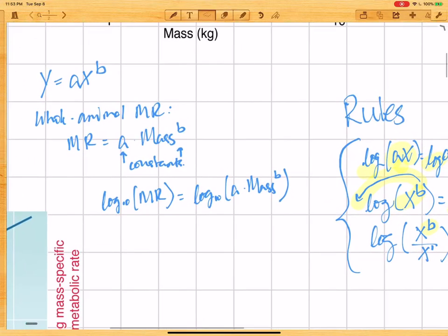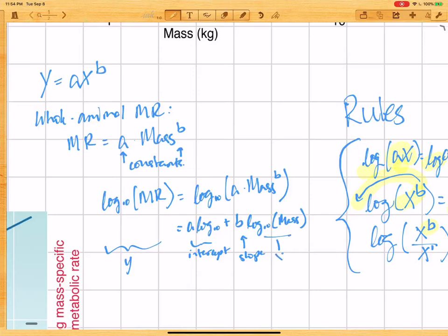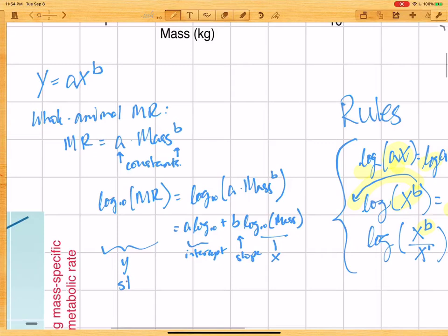Okay, so let's go back here. So how do we simplify this? So the log base 10 of the metabolic rate just becomes the sum of the logs. So log base 10 of a plus b times the log base 10 of mass. And what you notice here is that this is the y. This is the intercept. This is the slope. And this here is x. So this is a straight line with a y-intercept and a slope.